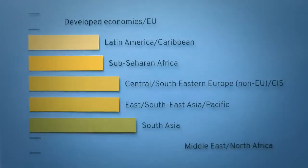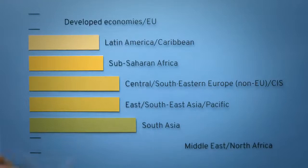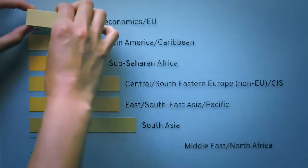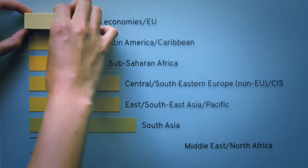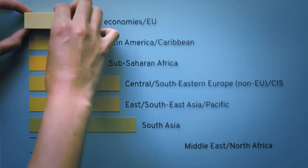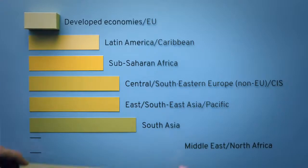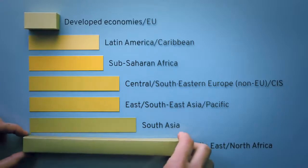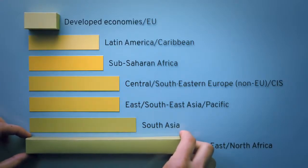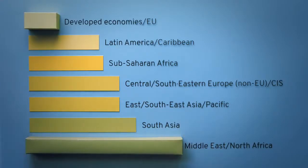For 2015, the overall trade union rights indicators show that the region with the worst average scores is the Middle East and North Africa, while the region with the best average scores is the EU and other developed economies.